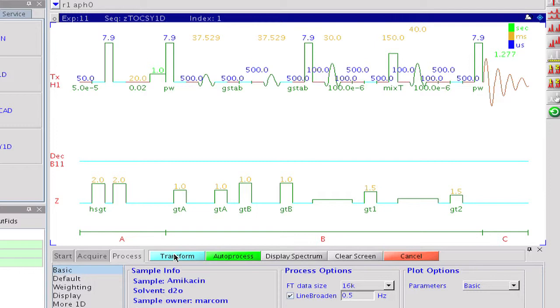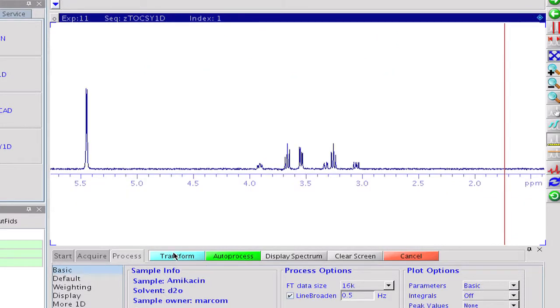We have now the sugar ring that has its anomeric proton at 5.5 ppm. The spectrum is clean. There is no crosstalk from other spin systems.